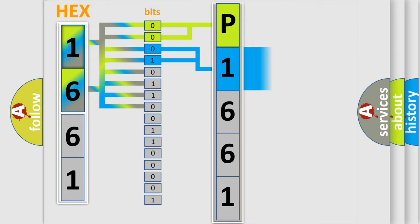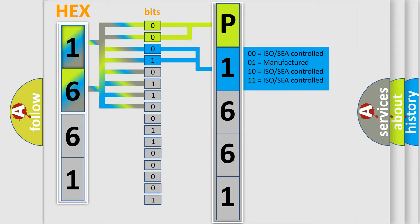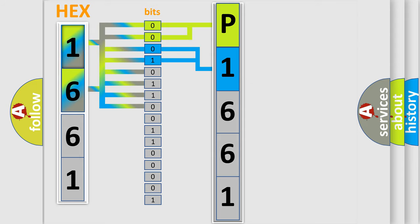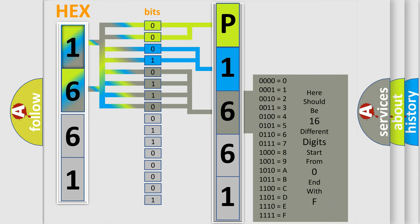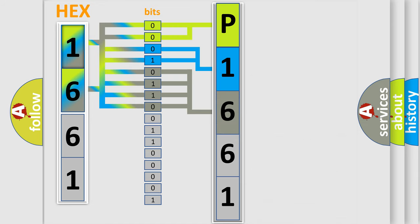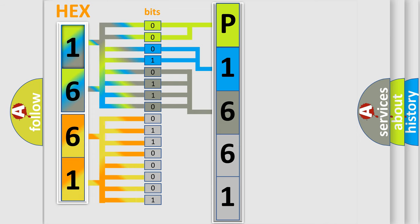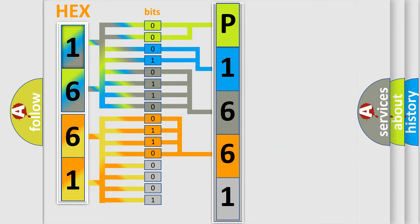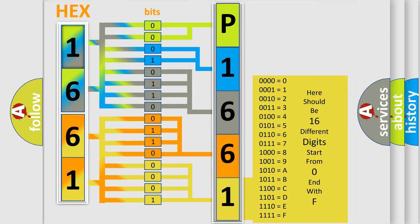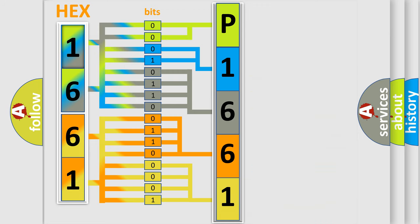The next two bits determine the second character. The last four bits of the first byte define the third character of the code. The second byte is composed of a combination of eight bits. The first four bits determine the fourth character of the code, and the combination of the last four bits defines the fifth character. A single byte conceals 256 possible combinations.